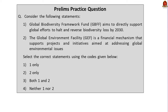Answering the question on the Global Biodiversity Framework Fund: Statement 1 — the GBFF aims to directly support global efforts to halt and reverse biodiversity loss by 2030 — is correct. Statement 2 — the Global Environmental Facility is a financial mechanism supporting projects and initiatives aimed at addressing global environmental issues — is also correct. The correct answer is option C — both 1 and 2.